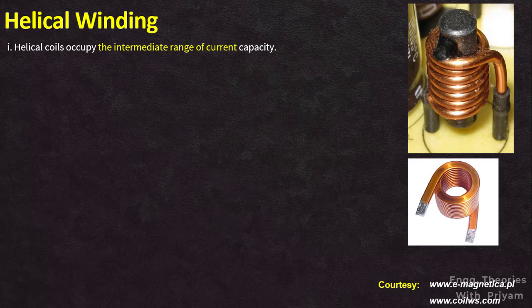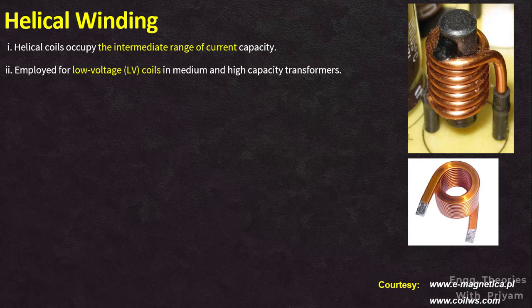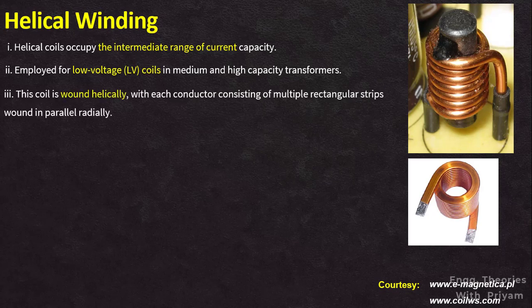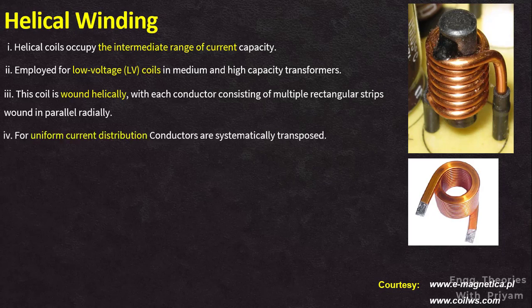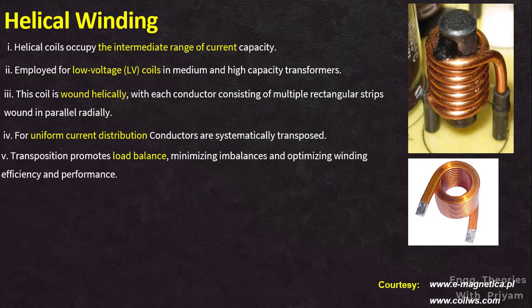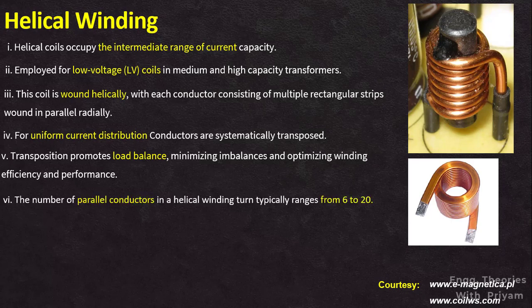Helical coils occupy the intermediate range of current capacity, bridging the gap between the high current capacity of spiral coils and the low current capacity of multi-conductor disc coils. Helical winding is employed for low-voltage coils in medium and high-capacity transformers where the number of turns is relatively small, but the current flowing through the winding can be as high as 2000 amperes. The coil is wound helically with each conductor consisting of rectangular strips wound in parallel radially. To ensure uniform distribution of current along the parallel conductors, they are systematically transposed within the winding so that each conductor occupies every position, minimizing potential imbalance and optimizing efficiency.